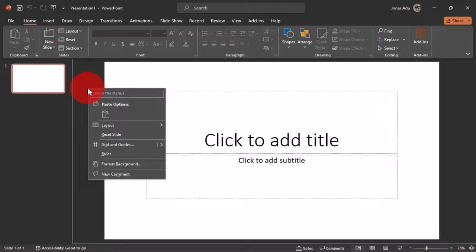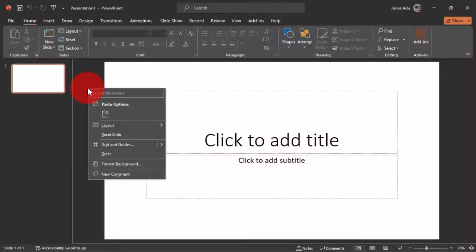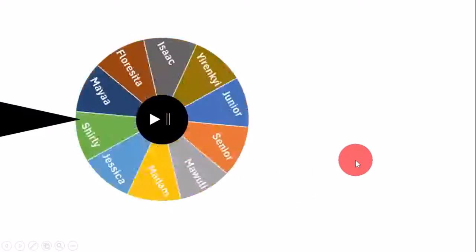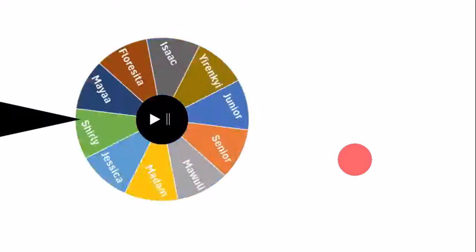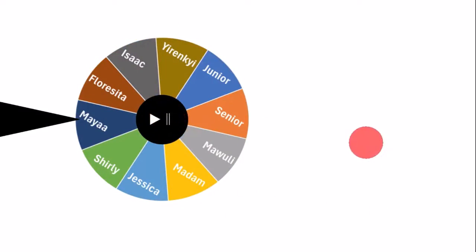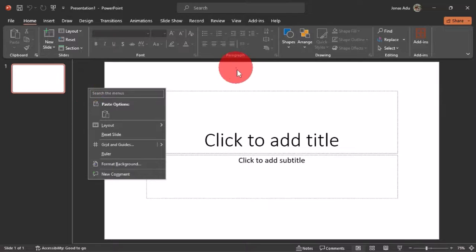I have Microsoft PowerPoint opened on my Windows interface. I previously posted a video on how to create a spinning wheel using numbers. In this video, I'm going to show you how to use names to create a spinning wheel which will serve as a random picker — applicable in classrooms or seminars to select individuals to perform tasks at a given time. Let's jump right in.